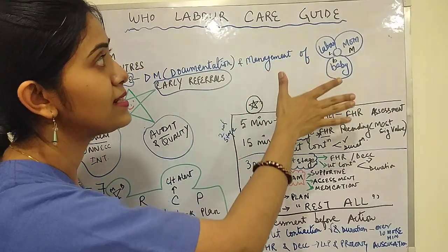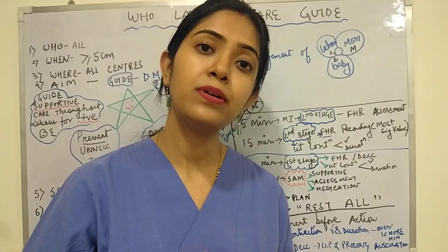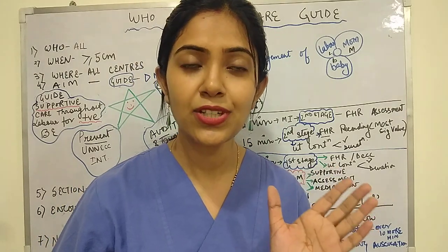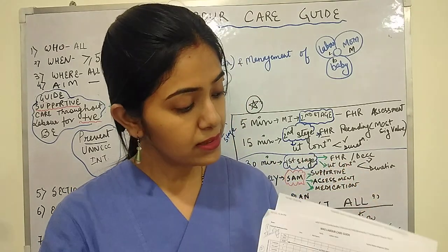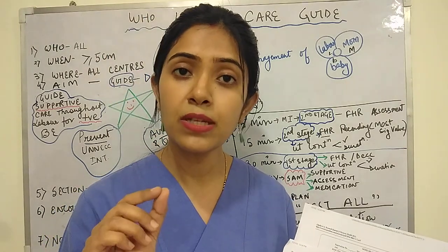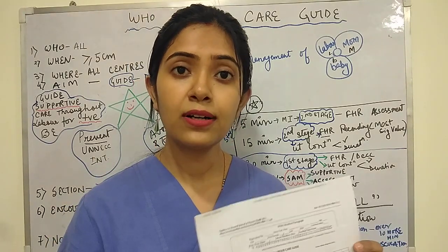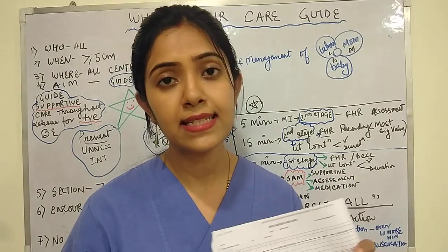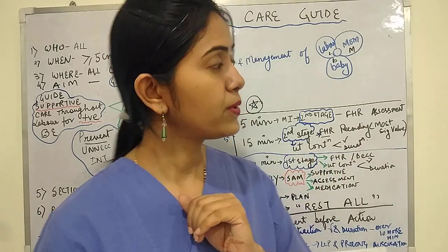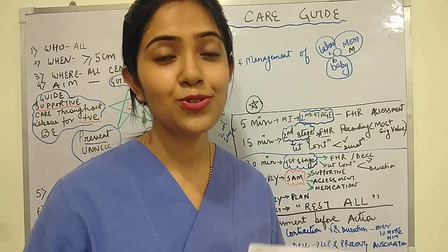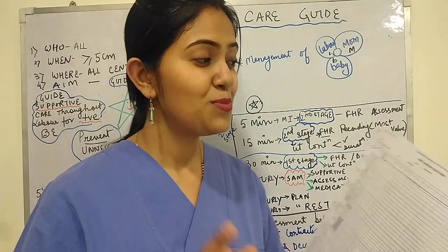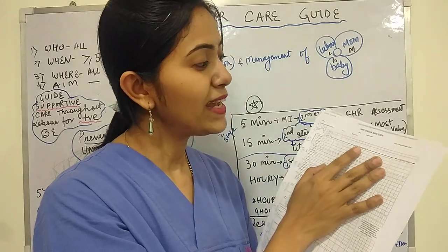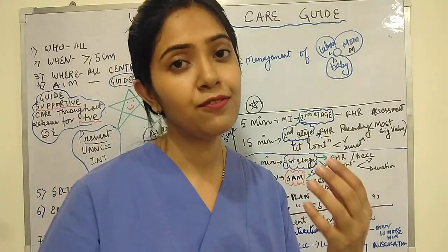The WHO Labor Care Guide is a very important tool for people dealing with women in active labor, that is at five centimeters or more of cervical dilatation. This is the new guideline — previously the modified WHO partograph used four centimeters as the threshold for active labor, but now it has changed to five centimeters. So when any woman in the labor room is found to be five centimeters or more dilated, do not forget to plot findings on the WHO Labor Care Guide.